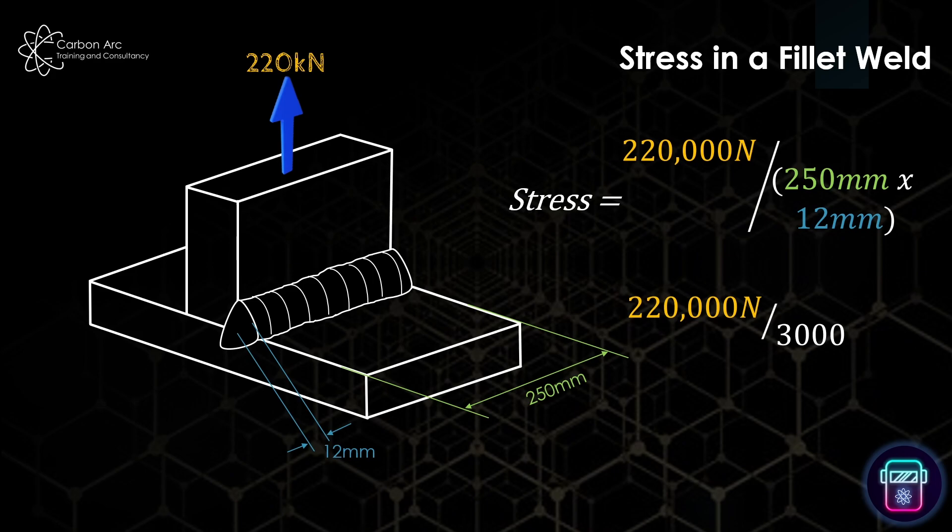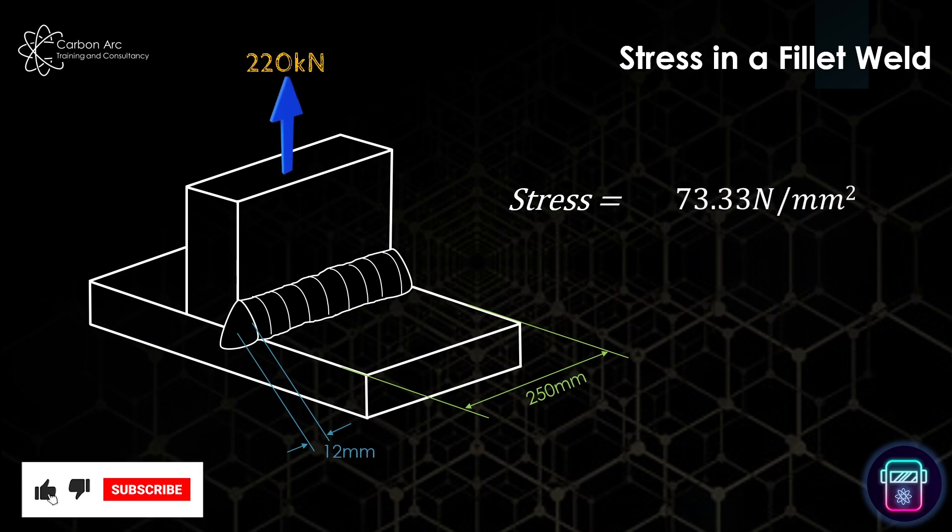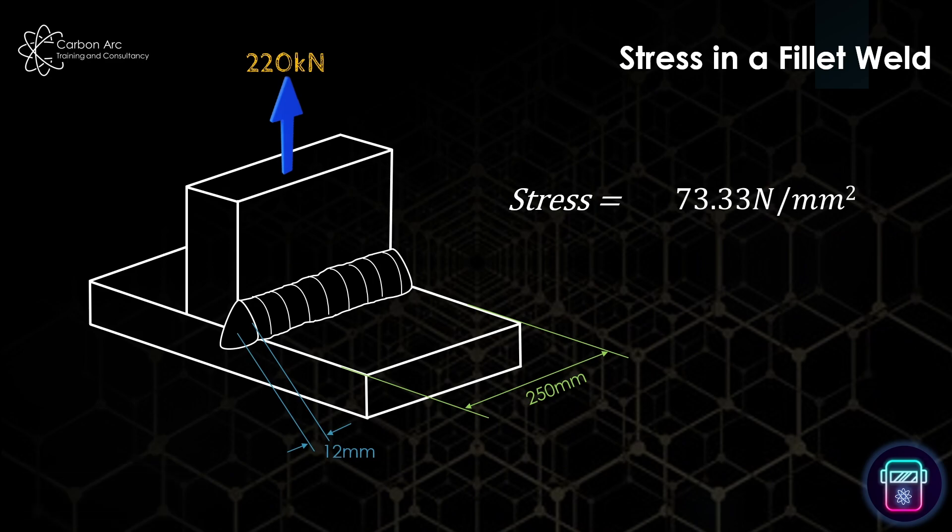So if I have that, I can then just finish off that equation. We've got 220,000 newtons divided by 3,000, which would be 3,000 millimeters squared. And that gives us a stress applied of 73.33 newtons per millimeter squared.